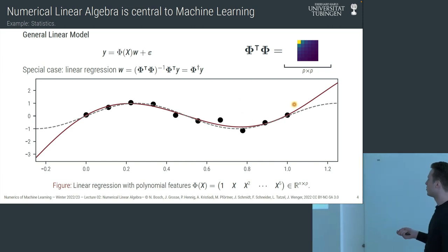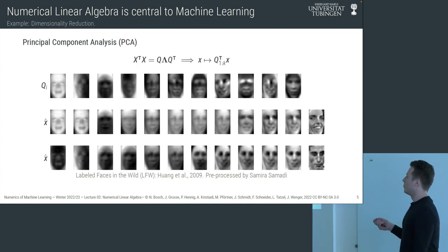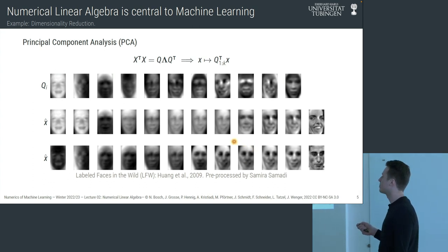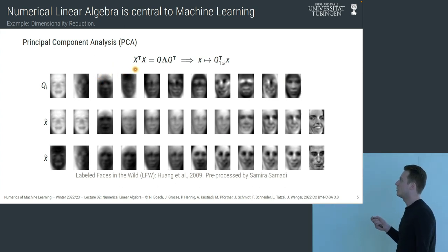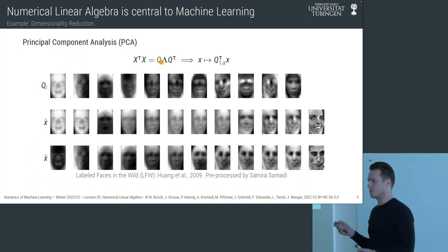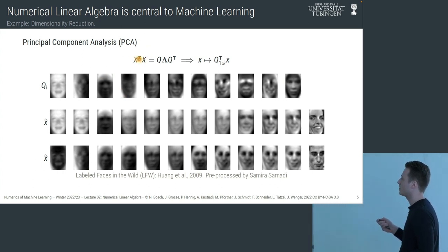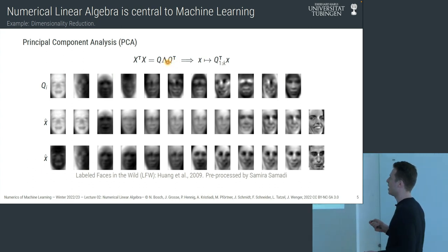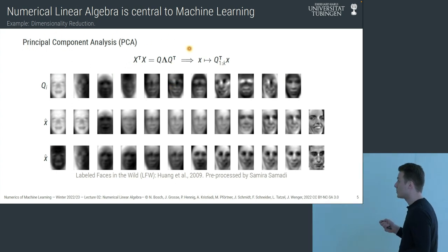Another well-known machine learning algorithm is principal component analysis, where the core is computing a truncated eigendecomposition — a factorization of the data covariance matrix into three matrices with prescribed structure. We also see another fundamental operation in numerical linear algebra: matrix-vector products. It seems almost too simple, but there's quite a lot to discuss.